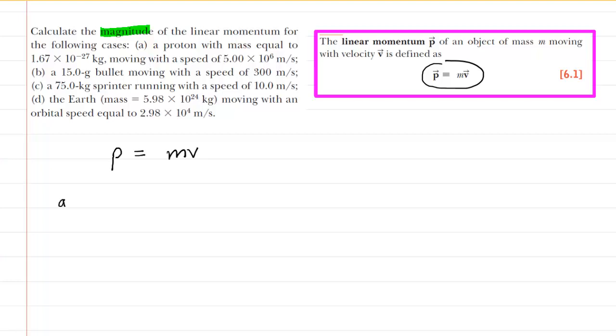So, for instance, in part A, we have a proton whose mass and speed are both given to us. We simply have to plug those two values in. So, we'll take the mass of 1.67 times 10 to the minus 27 kilograms and then multiply that by the given speed of 5.00 times 10 to the sixth meters per second.